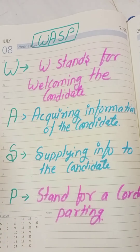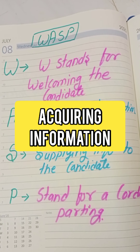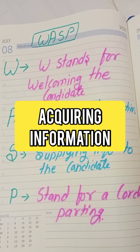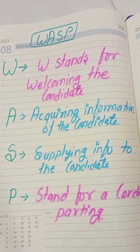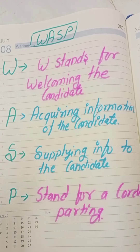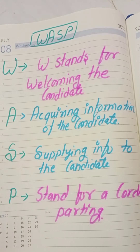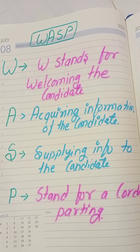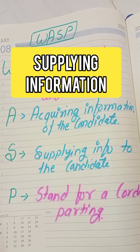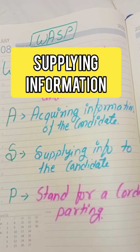The A stands for Acquiring information. After welcoming and putting the candidate at ease, you should set about acquiring information from the candidate — all the information about their technical qualification, ability, willingness, effectiveness, relations, and balance of mind. This is what acquiring information from the candidate means.